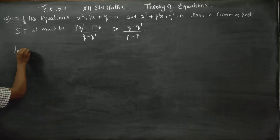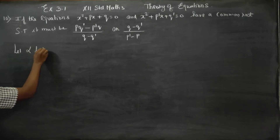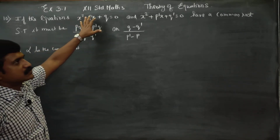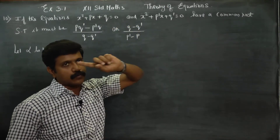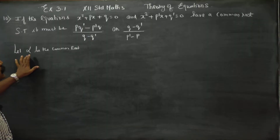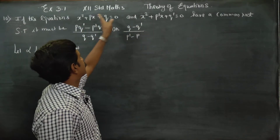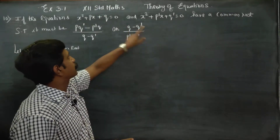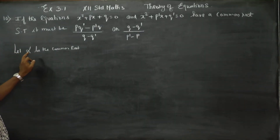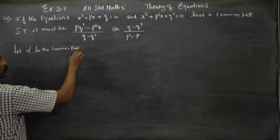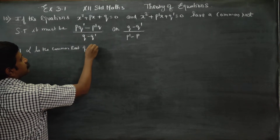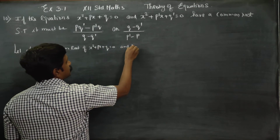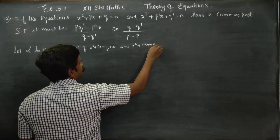Let alpha be the common root. Let alpha be the common root of these two equations: x squared plus px plus q equal to 0, and x squared plus p-dash x plus q-dash equal to 0.